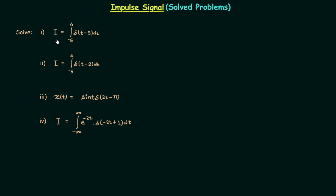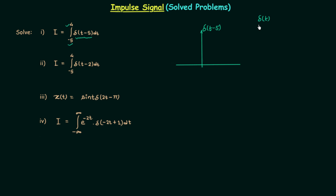In the first problem, integration is given and we are integrating δ(t-5) from -5 to 4. The first step is to plot the waveform of the signal. δ(t-5) is obtained by time-shifting the unit impulse signal to the right by 5 units. So when time t equals 5 we have an impulse, and the weight of the impulse is 1.